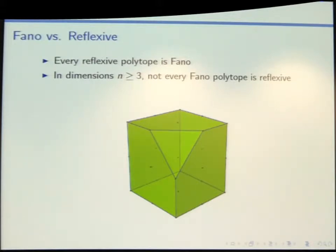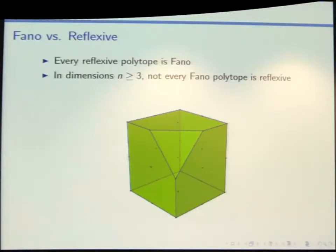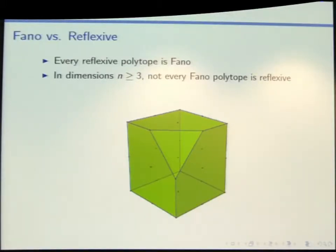There is one thing I have to tell you just because of the way I set it up. In two dimensions, the condition of only having one lattice point in the interior — which we call the Fano condition — is identical to the reflexivity condition that comes out of polar duality. Once you go past two dimensions, those conditions are a little bit different. Every reflexive polytope will have a unique strictly interior lattice point, but there are some polytopes that have that property but are not reflexive.